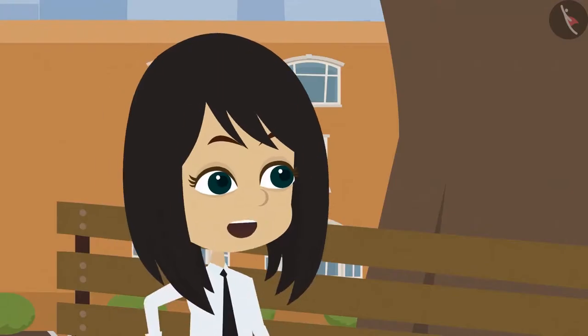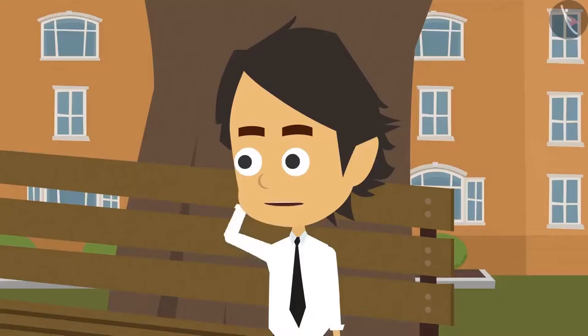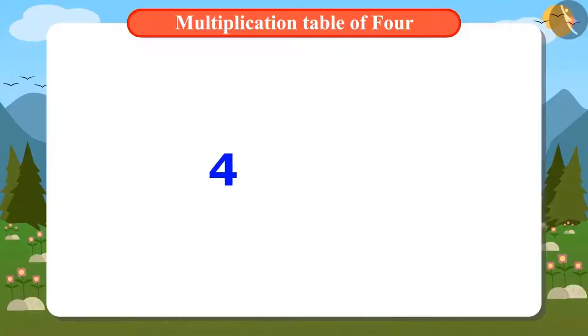It is very easy. Keep adding 4 again and again or keep leaving 4 numbers and count them. I don't understand. Look. To know the first number in multiplication table of 4, we will multiply 4 by 1. For that, we have to add 4 only once. The answer will be 4.